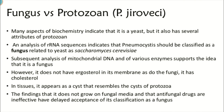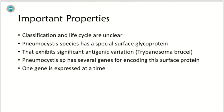The findings that it does not grow on fungal media and that anti-fungal drugs are ineffective have delayed acceptance of its classification as a fungus. Important properties: the classification and life cycle of Pneumocystis are unclear. Pneumocystis species has a special surface glycoprotein that exhibits significant antigenic variation. Pneumocystis species has several genes for encoding this surface protein.